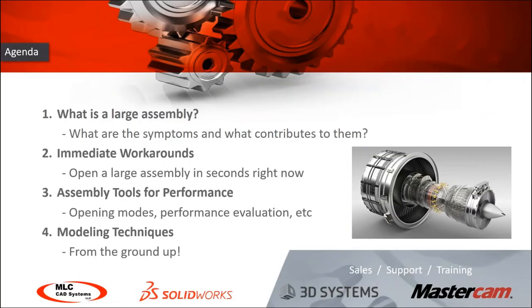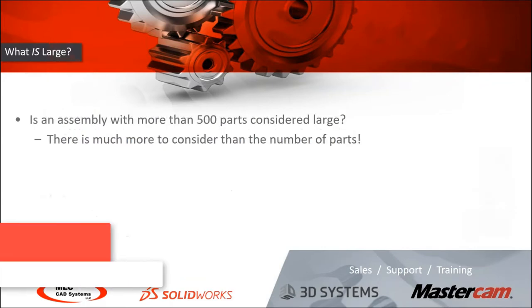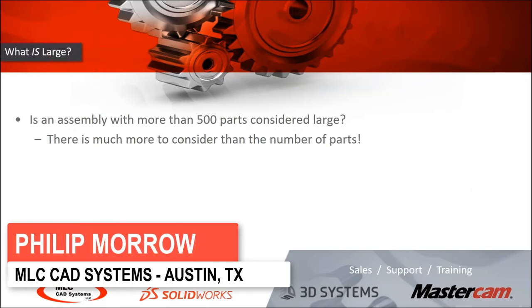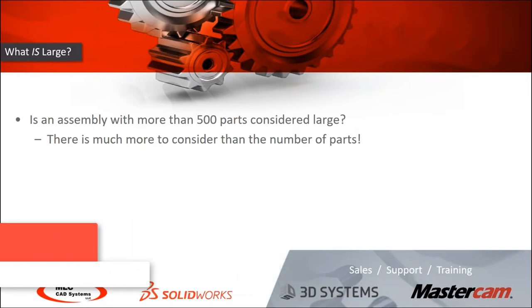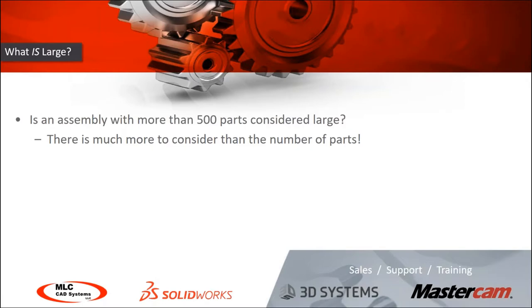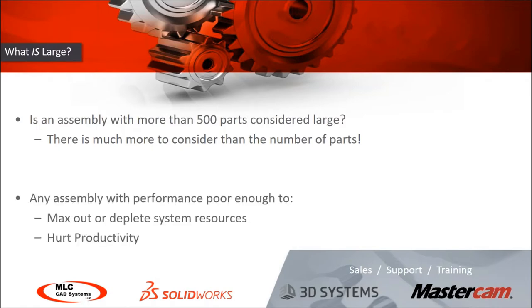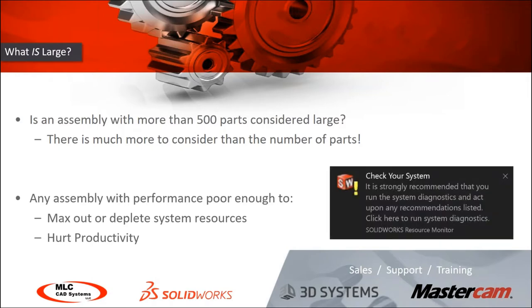What exactly is a large assembly? It is defined as an assembly with more than 500 parts, but there's a lot more to consider than just the number of parts. We're going to define a large assembly as simply any assembly with performance poor enough to max out or deplete your system resources, or simply to hurt your productivity.